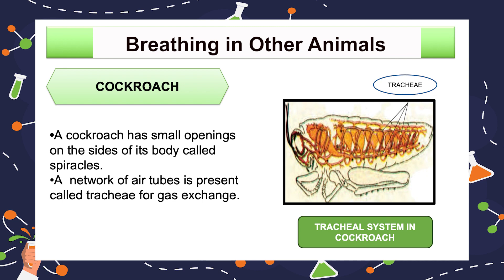These openings are called spiracles. A network of air tubes called trachea is used for gaseous exchange. Oxygen-rich air goes in through the spiracles into the tracheal tubes, diffuses into the body tissue, and reaches every cell of the body. Carbon dioxide from the cells goes into the tracheal tubes and moves out through spiracles.